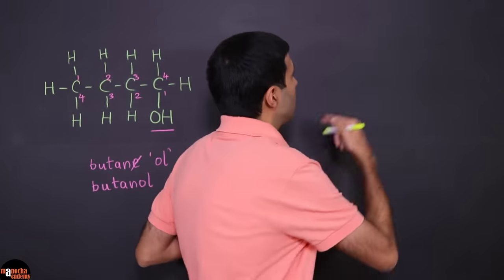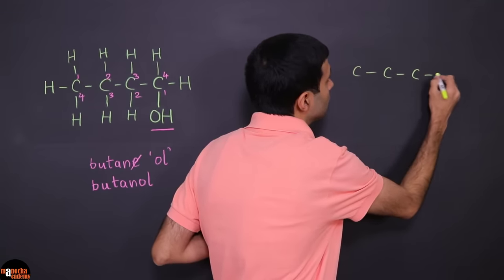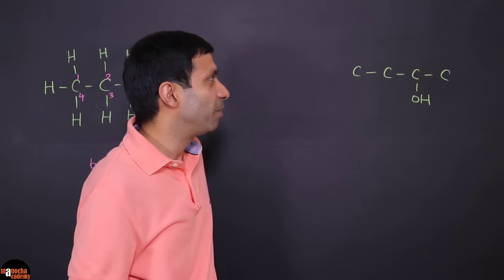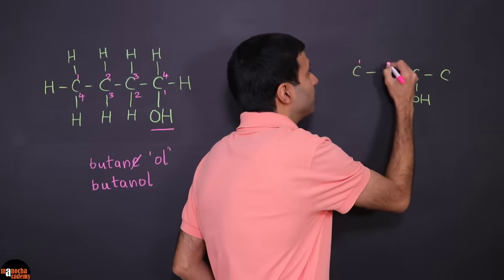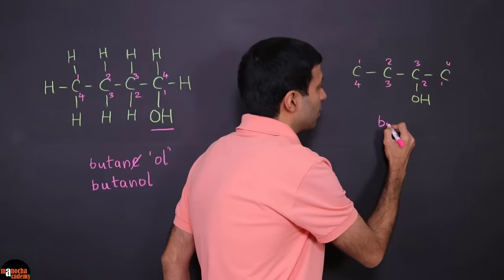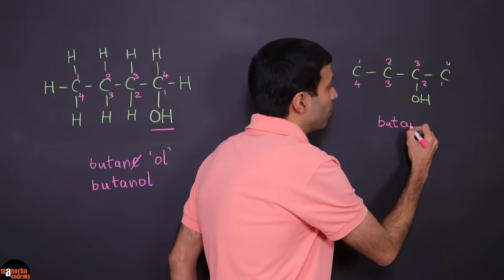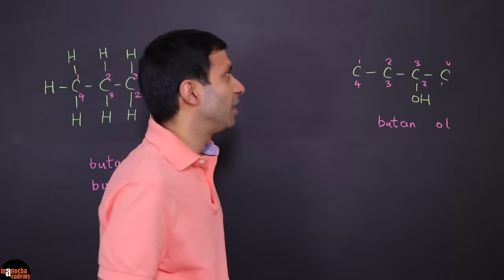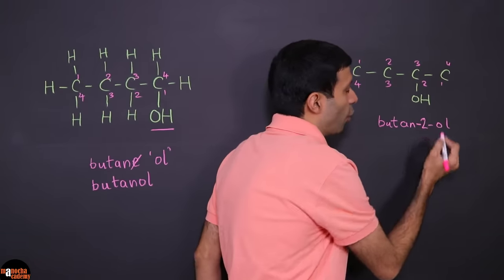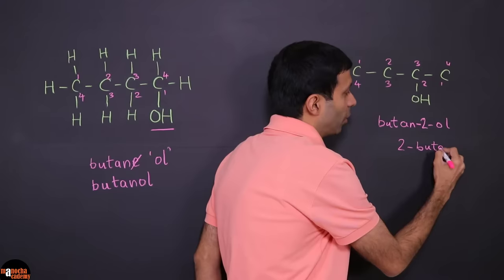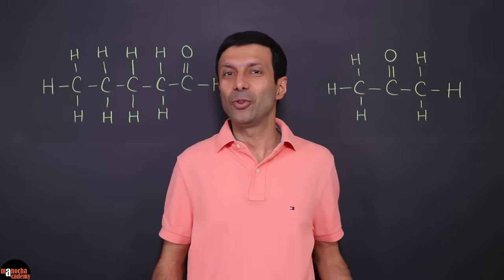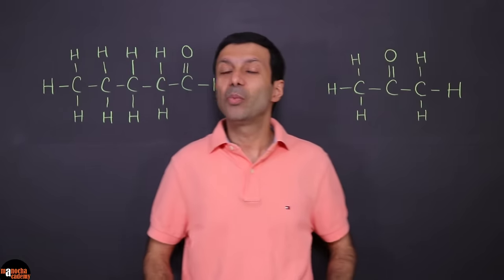Now let's say the OH is at a different position — on carbon two. Again we number the four-carbon chain to give OH the smallest number: position two, not three. The name is butan-2-ol. Sometimes you might find it written as 2-butanol, but the preferred IUPAC style is butan-2-ol.